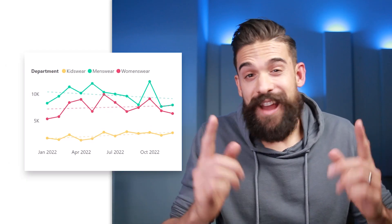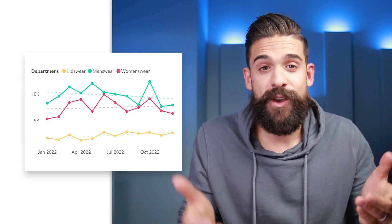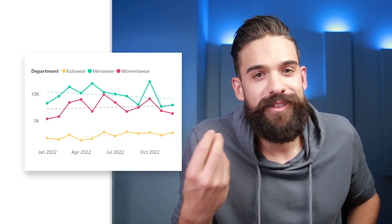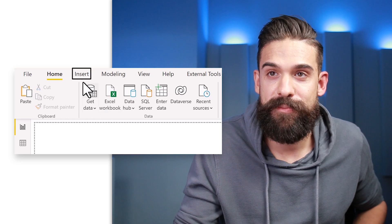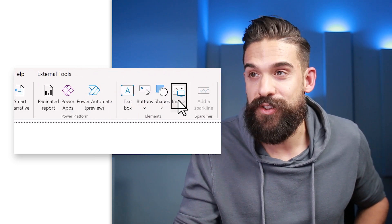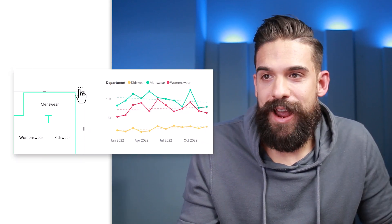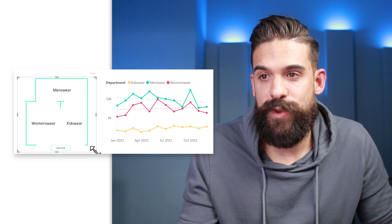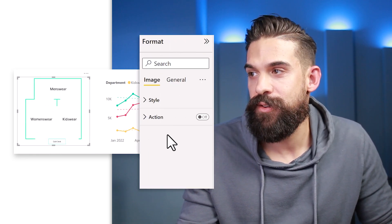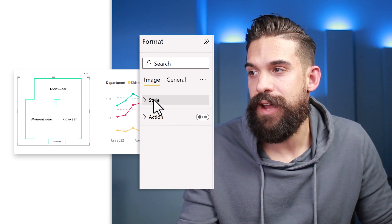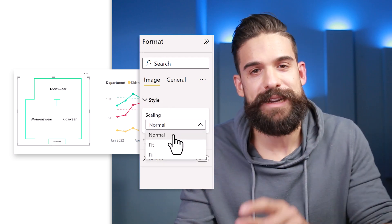As a starting point, I only have that line chart, and right next to it we are going to insert, first of all, an image — an image of the floor map. Go to Insert at the top, then Image. Take the image and put it right next to the line chart, then resize it so it has more or less the same height. Then go to the right-hand side to Format, Style, and there we have the scaling set to Normal.